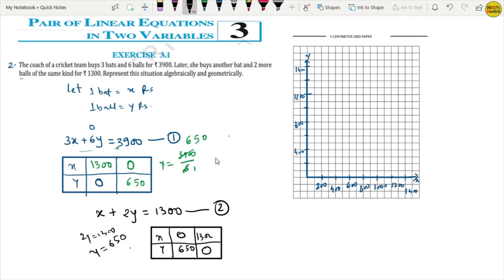If I compare these two points, they are the same here. Here is 0,650 and here is 1,300. Maybe this can be our coincident line. So, let's plot this one. For the first one, 1,300 and 0. This is 1,300.